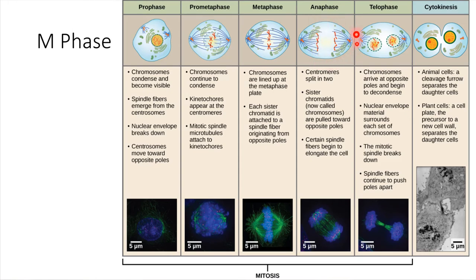You can see again in the schematic — one sister chromatid heads to the left, the other one heads to the right. And it's the mitotic spindle that's pulling them apart from each other.